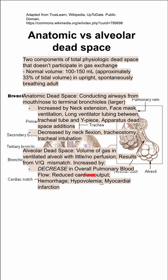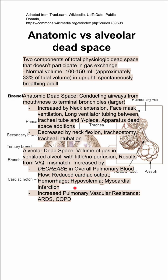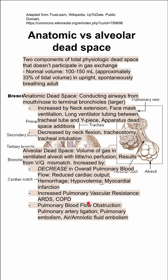Things that decrease your overall pulmonary blood flow include reduced cardiac output, hemorrhage, hypovolemia, and myocardial infarction. You can also increase your alveolar dead space by increasing pulmonary vascular resistance, like in ARDS and COPD.